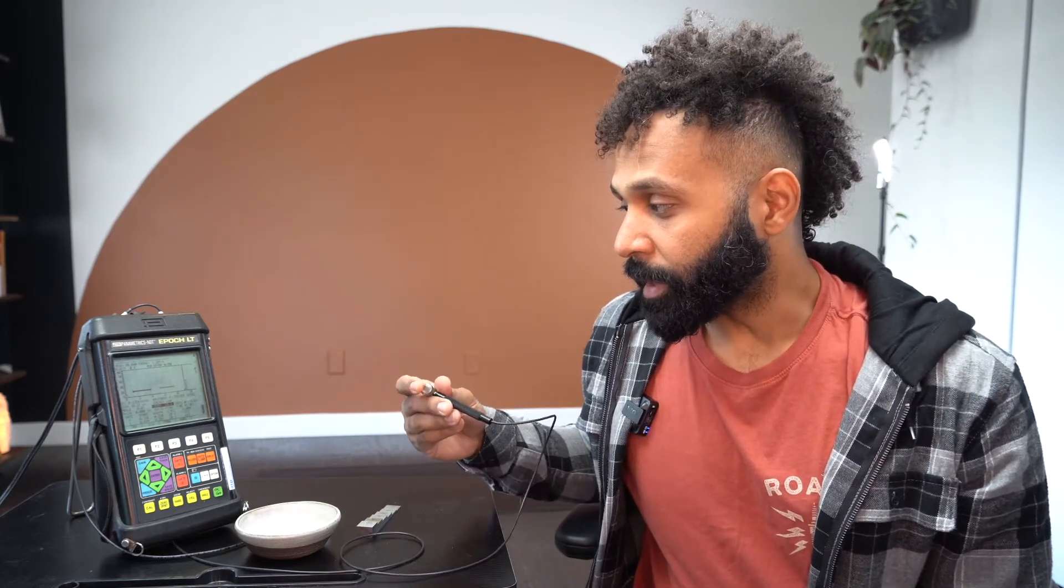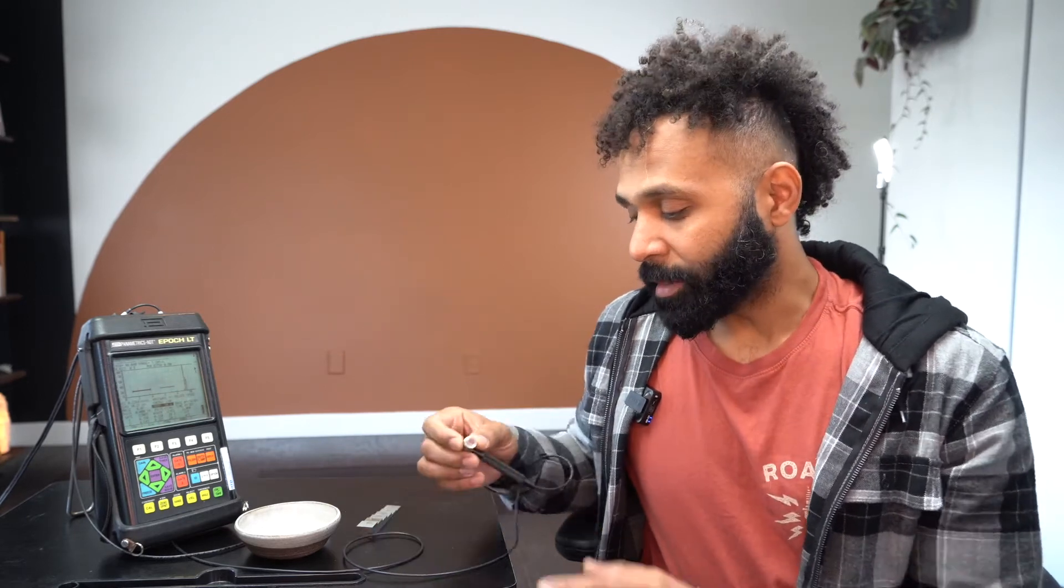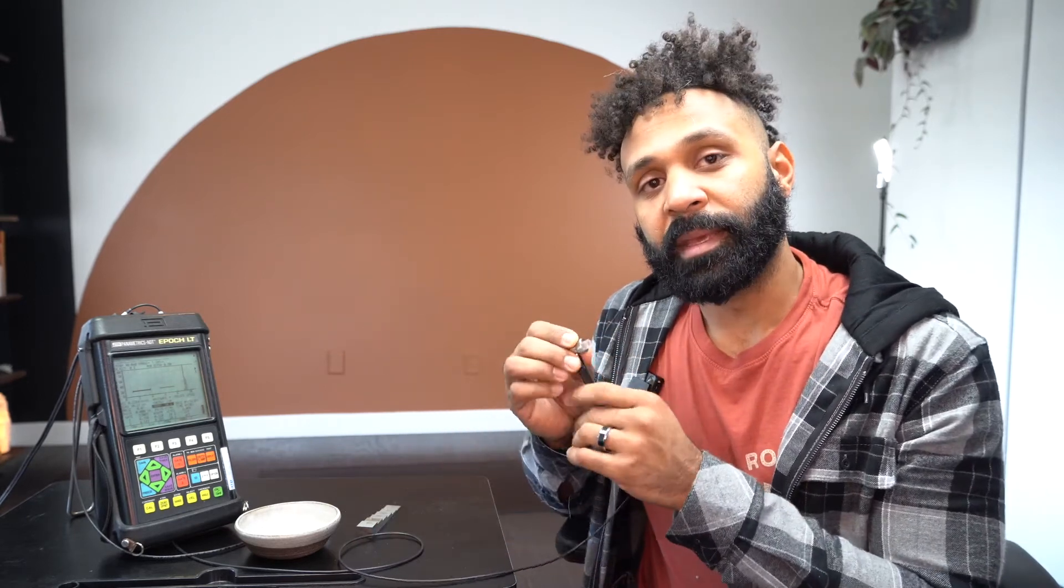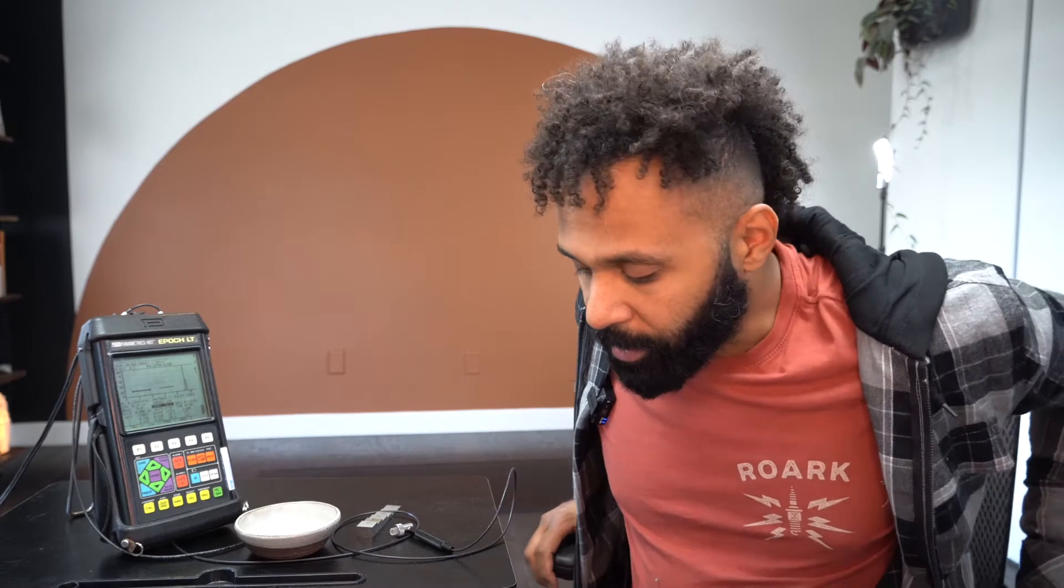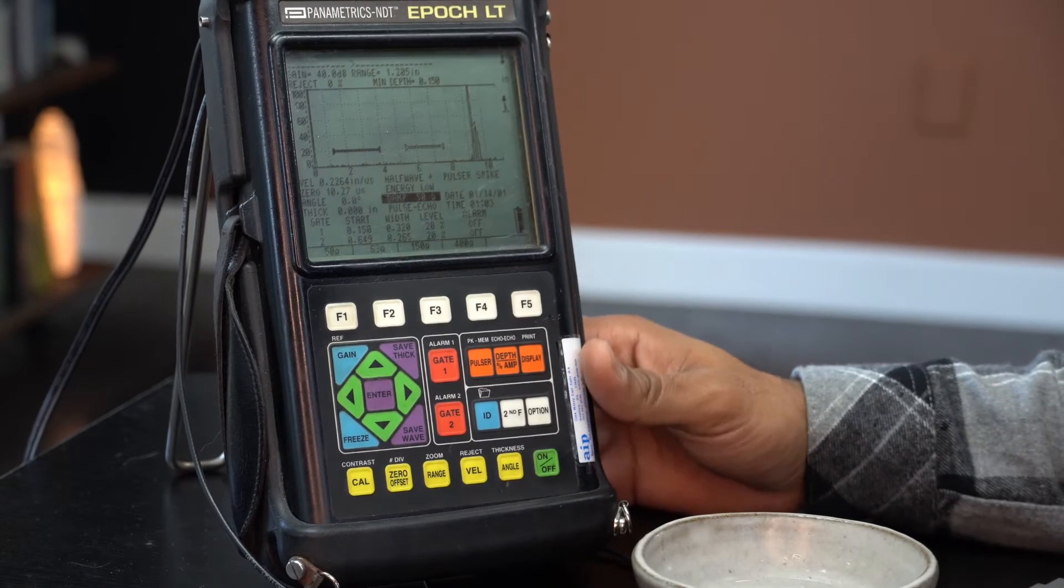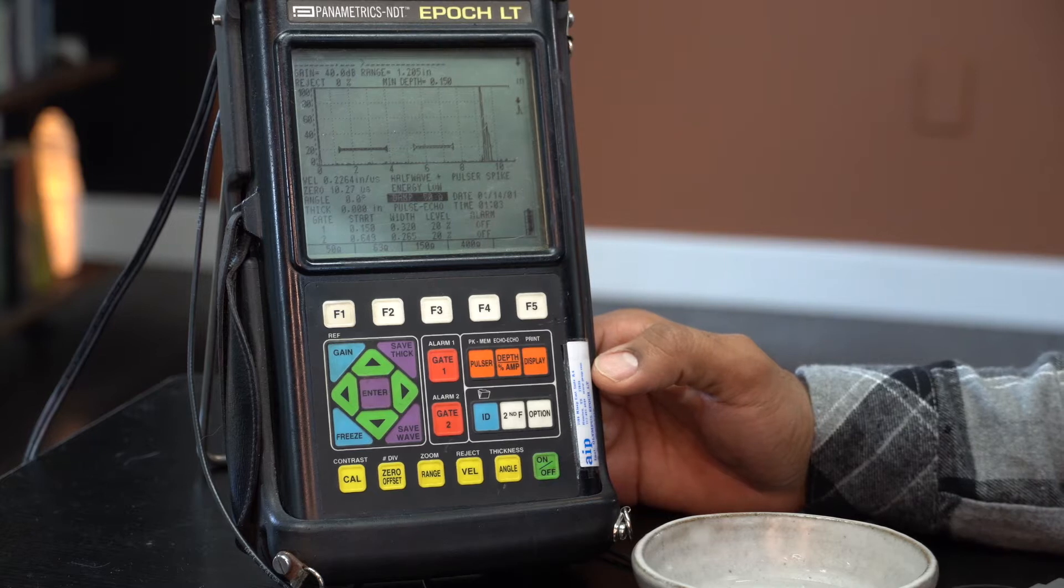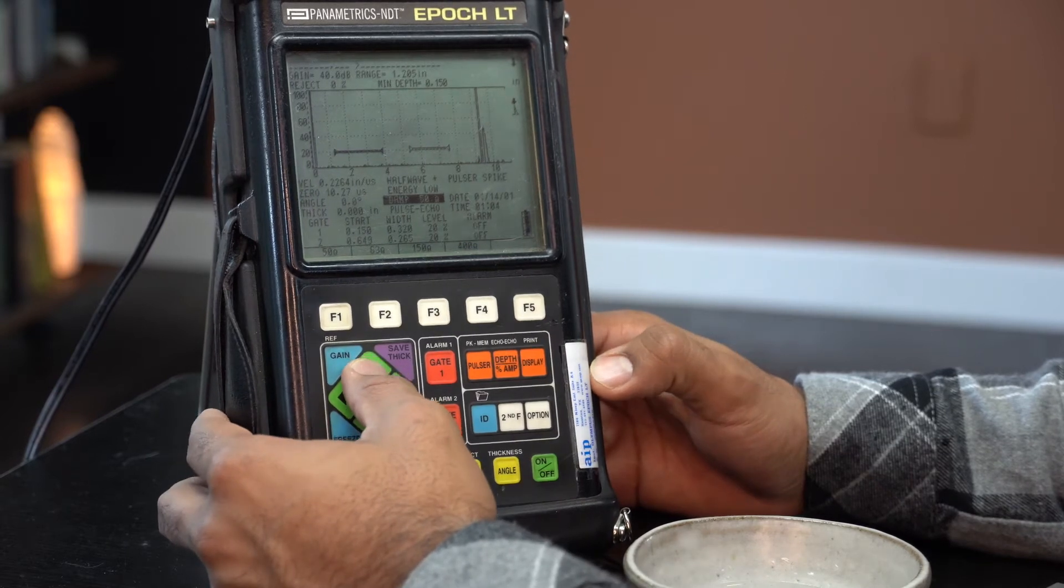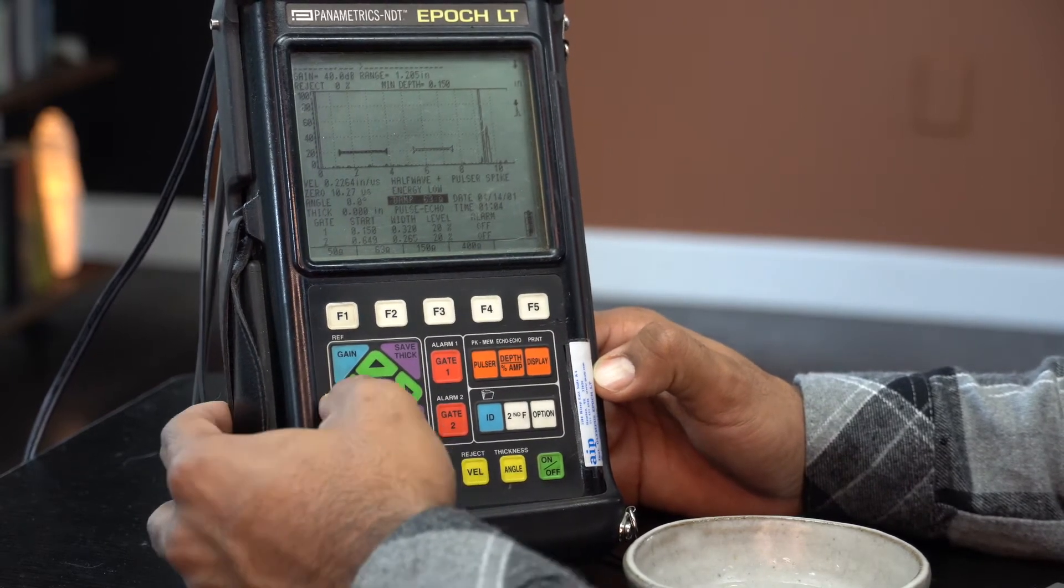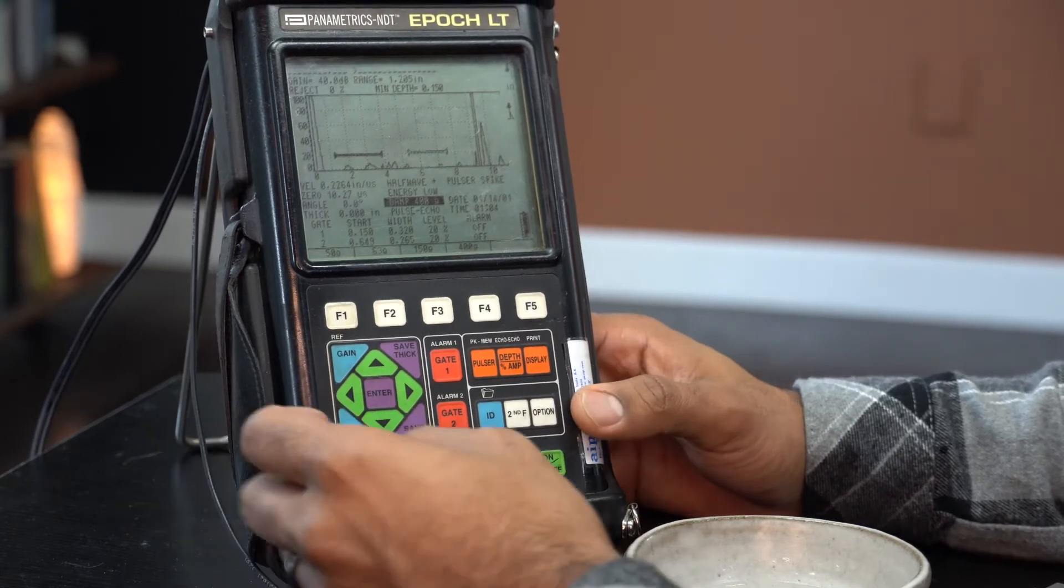One thing about a delay tip is obviously as the name implies you will have to delay your initial pulse back to where the end of the tip is. This particular tip tends to come at about half inch, so it's difficult to size anything around there. Basically anytime you're going to be setting up thickness, the most important things that you're going to be dealing with are the velocity and the delay.